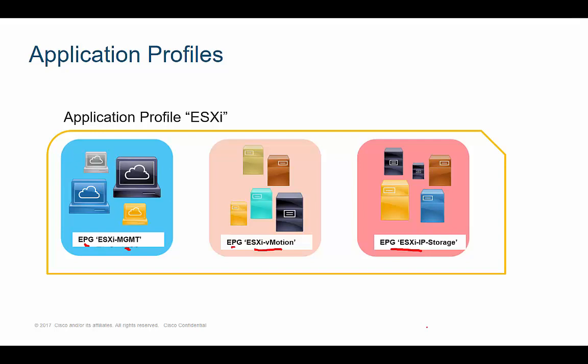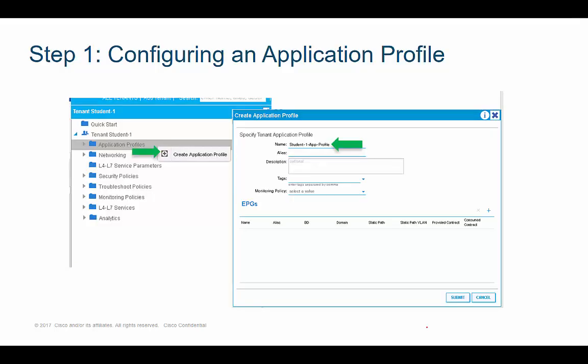So step one is to create an application profile. In the lab, you go into your tenant, right-click Application Profiles, create an application profile, and name it. Notice there's a plus sign — you could click it to automatically create EPGs within this window. Throughout this class, I break everything into individual steps to facilitate learning, rather than nesting multiple windows.